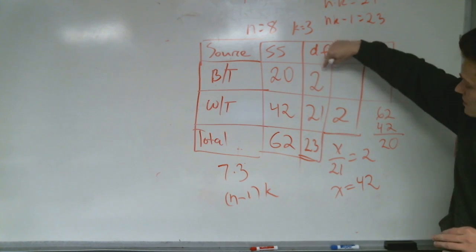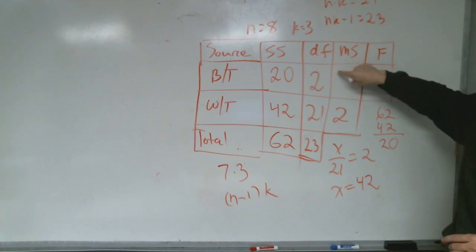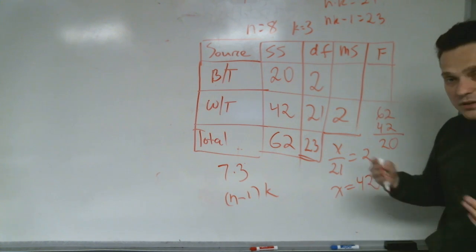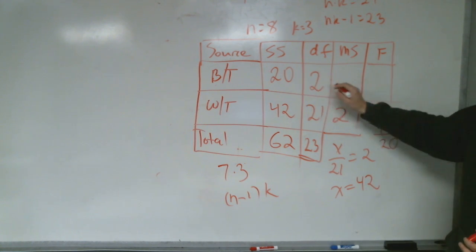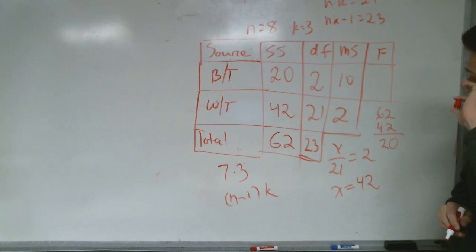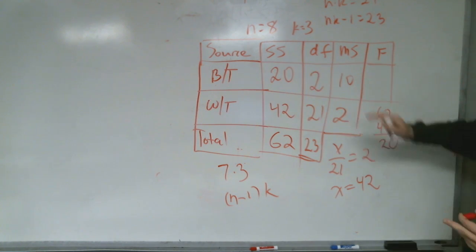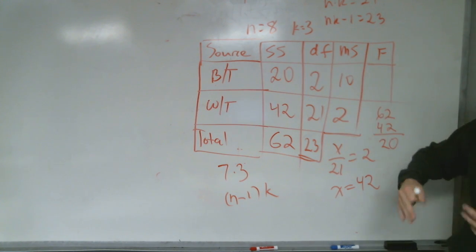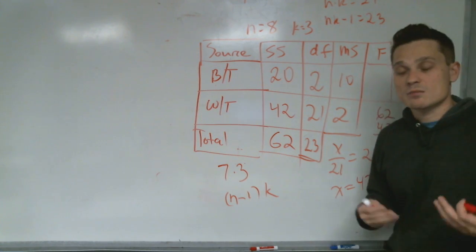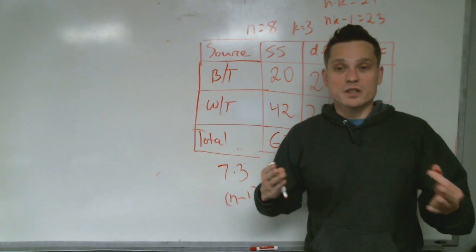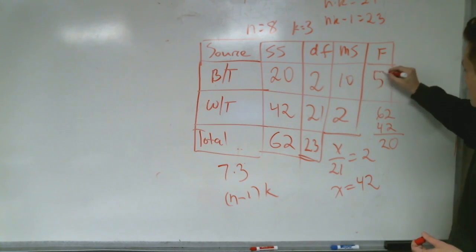Now, if this is 2 degrees of freedom and the sum of squares is 20, that means the mean square — the variability per degree of freedom — is 10. And therefore, the F-ratio, which is mean square between over mean square within, is a comparison of variability per degree of freedom. You have 10 divided by 2, which is 5. So that's your F-ratio.